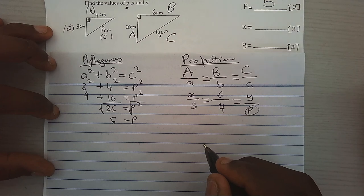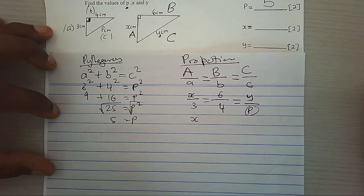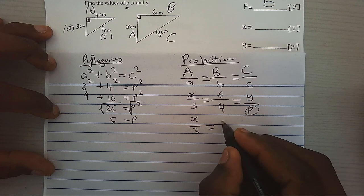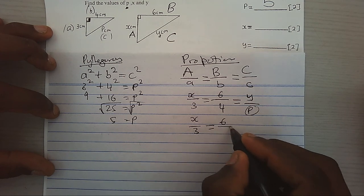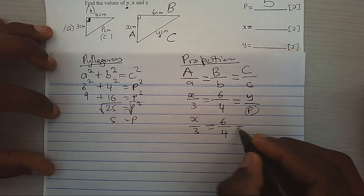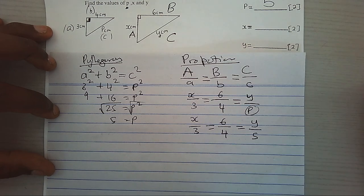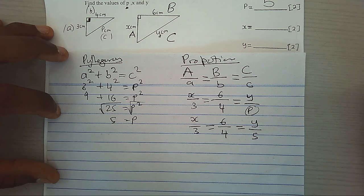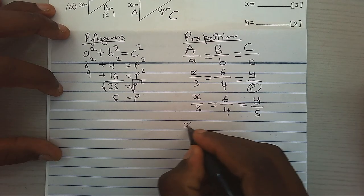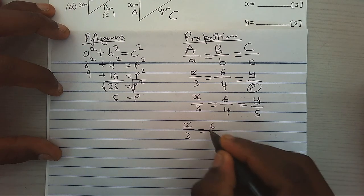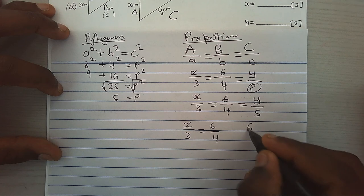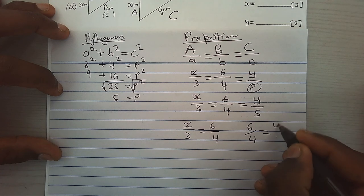Now, we shall be having X over 3 is equal to 6 over 4 equal to Y over 5. Because P, we already obtained 5. After that, we shall just take pairs. X over 3 pair up with 6 over 4. And again, 6 over 4 pair up with Y over 5.